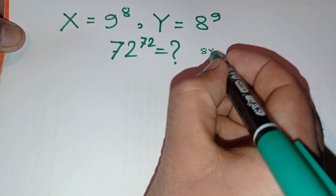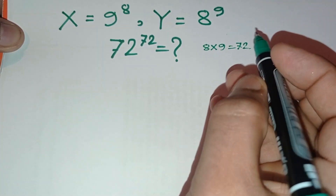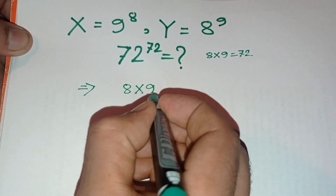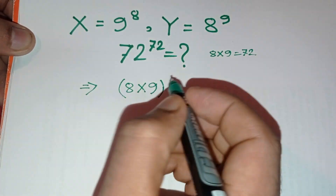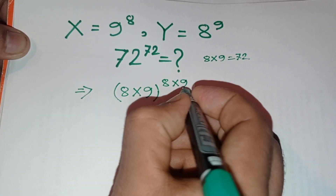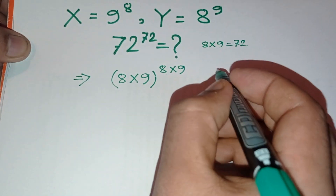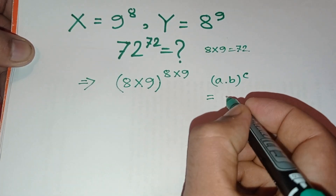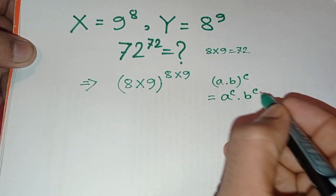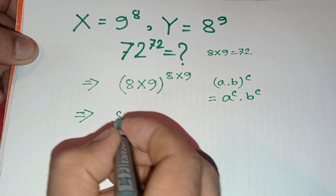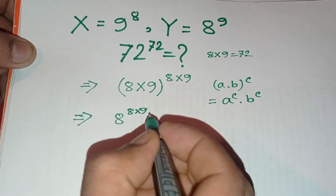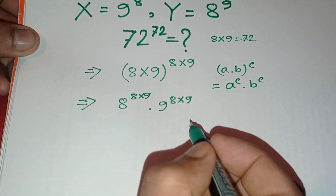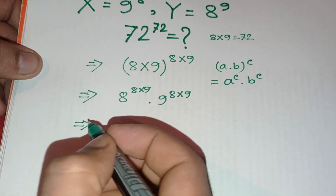Since 8 times 9 equals 72, we can write 72 as (8 × 9) to the power (8 × 9). We know the formula: (a × b) to the power c equals a to the power c times b to the power c. So we can write 8 to the power (8 × 9) times 9 to the power (8 × 9).